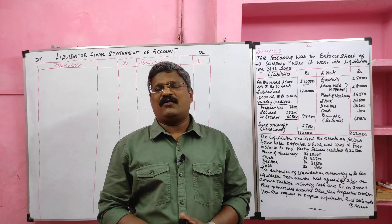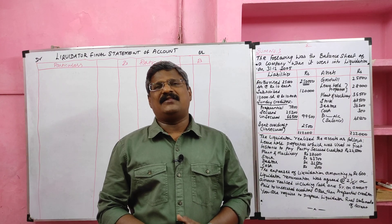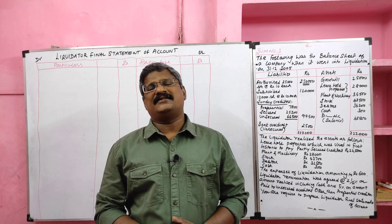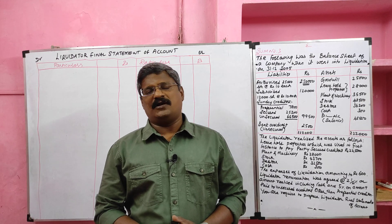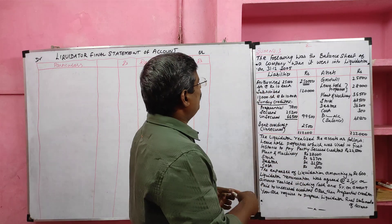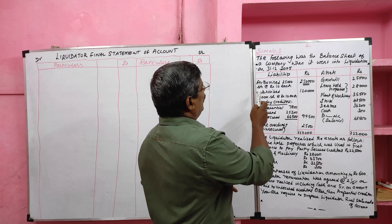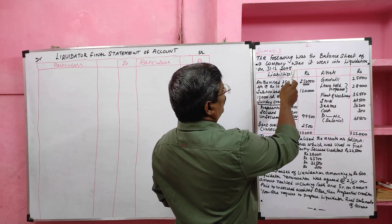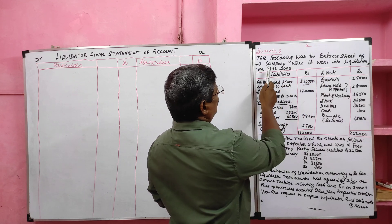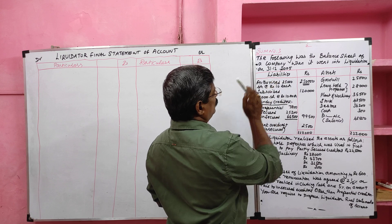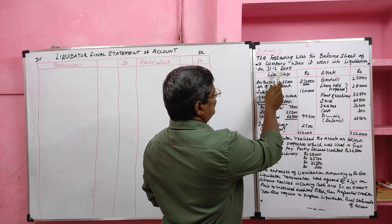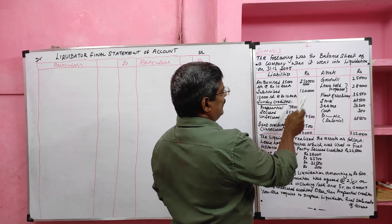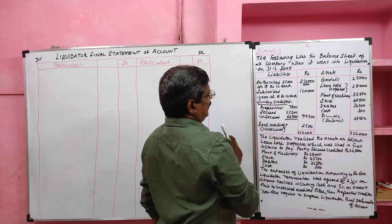Students, today we are going to solve the third problem in relation to liquidator's final statement of account. Look at the board — sum number three. The following was the balance sheet of the company when it went into liquidation on 31st December 2005. This is the liquidation date as well as the balance sheet date.